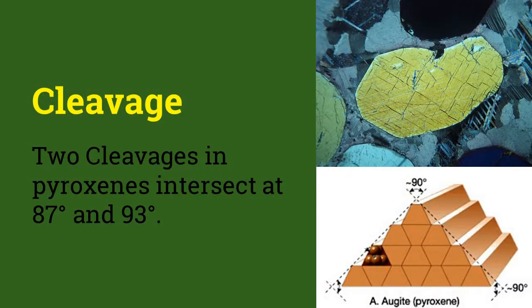Pyroxene has two prismatic cleavages that intersect each other at nearly right angles. This cleavage is present in both hand specimen and in microscopic view.